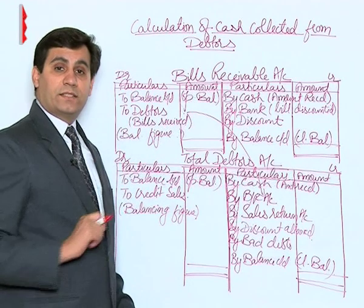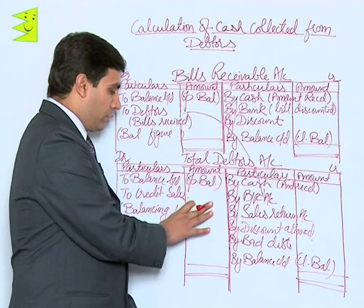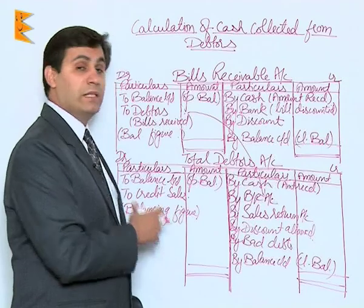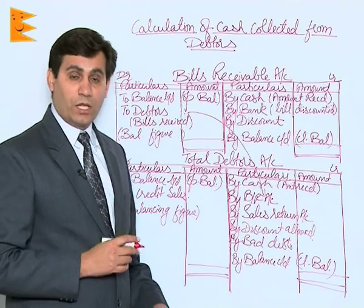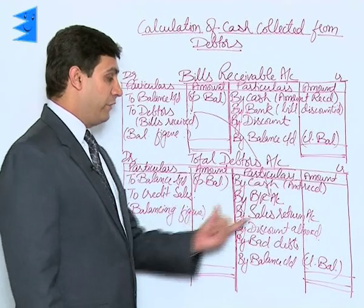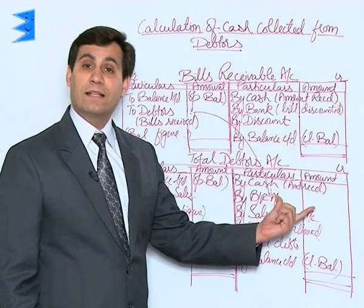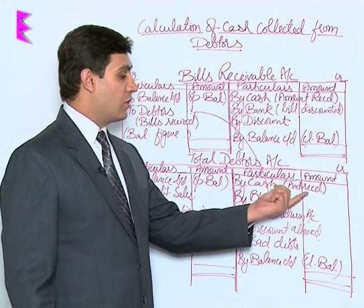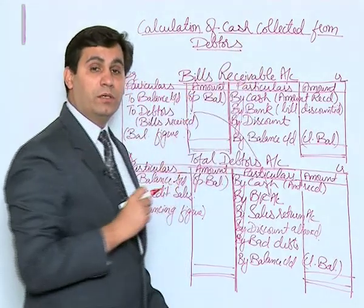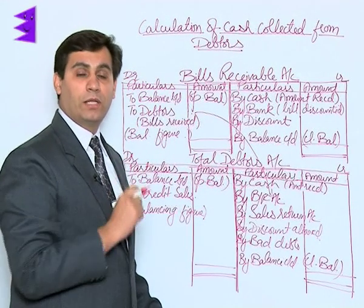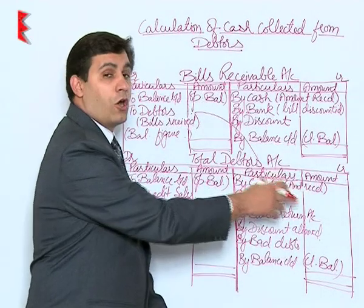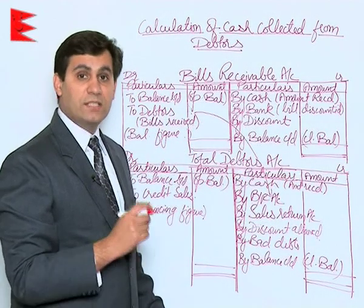If we are given total sales, we calculate credit sales from the total debtors account, then deduct credit sales from total sales to get cash sales. There is another scenario: if credit sales are already given, then cash — representing the amount received from debtors — becomes the balancing figure. So the balancing figure can either be credit sales or the cash collected from debtors during the period.